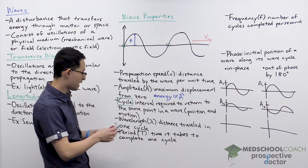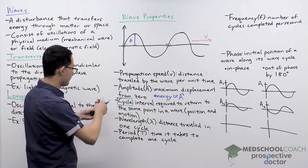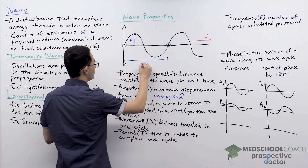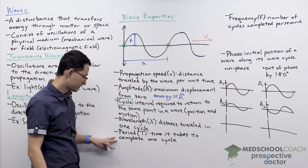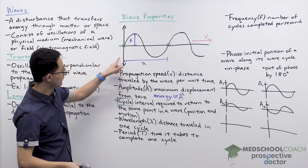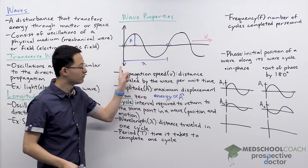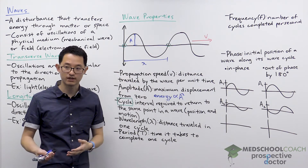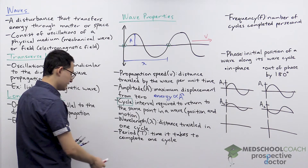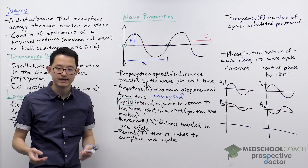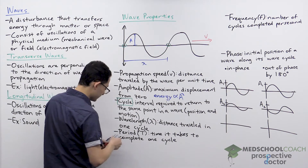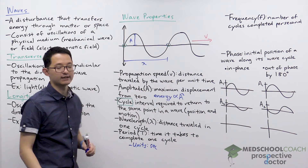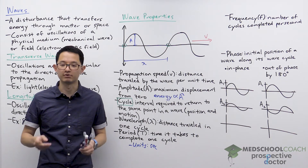The wavelength is the distance traveled in one cycle. Looking at the graph, the distance traveled along the wave from one point to the corresponding next point is the wavelength. The period is the amount of time it takes to complete one cycle. The units are seconds per cycle — though we typically just report seconds. So if something has a period of five seconds, it takes five seconds to complete one cycle.